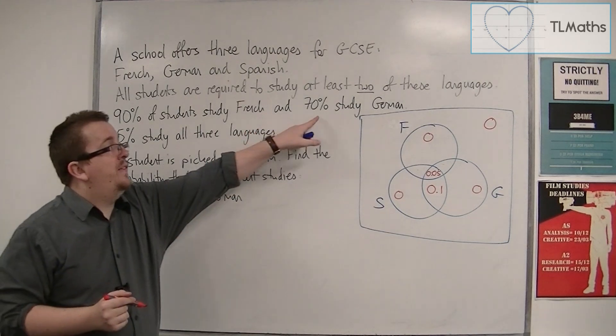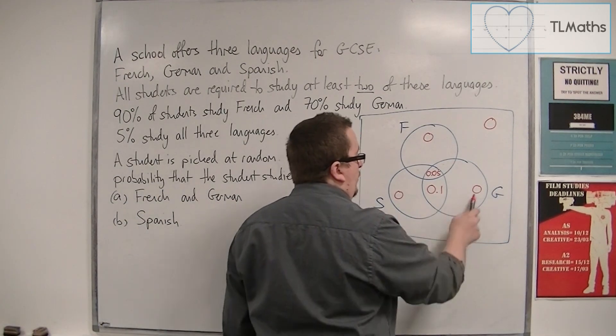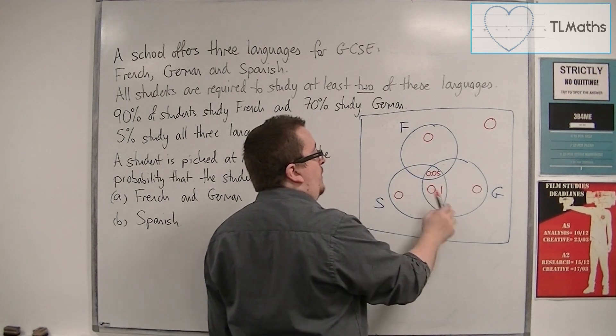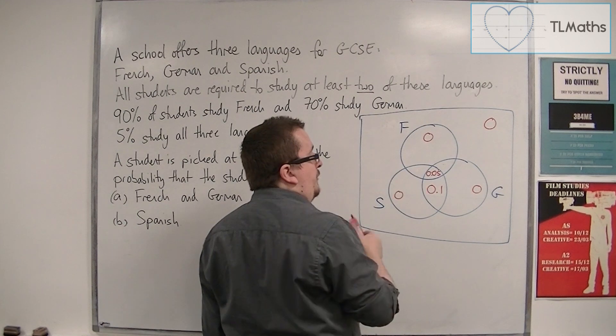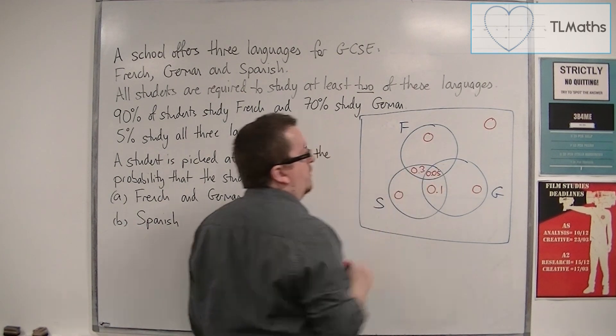We're also told that 70% study German. So this whole section here must be 70%. And so this bit must be the remaining 30%. So 0.3.